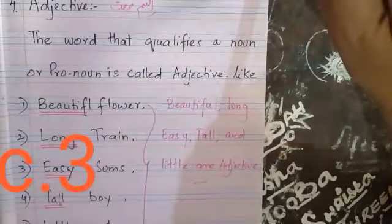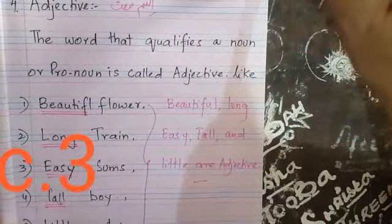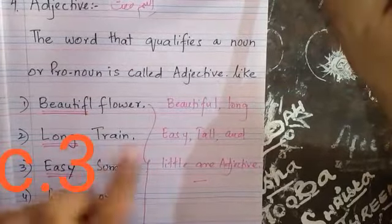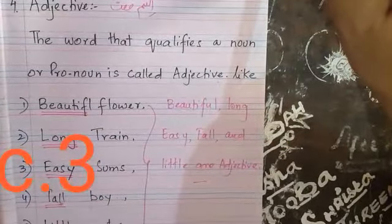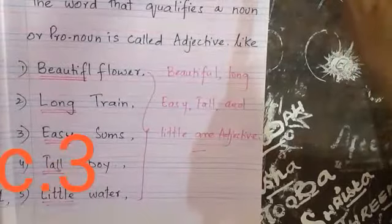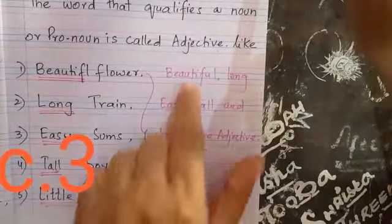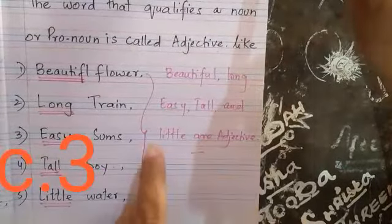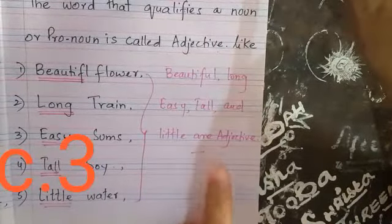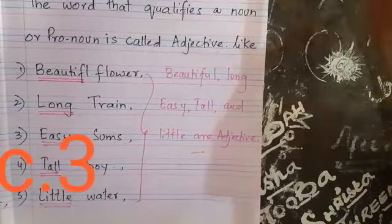Like beautiful flower, long train, easy sums, tall boy, little water. In this, beautiful, long, easy, tall and little are adjectives. Okay, class.